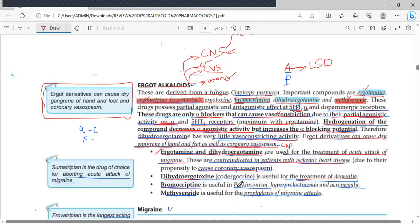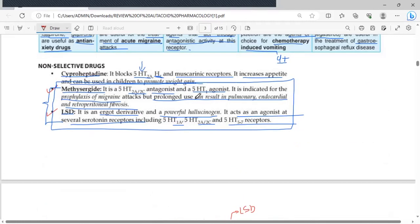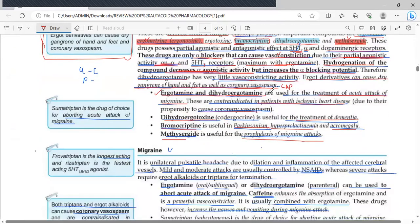Bromocriptine, I told you, can be used in the treatment of Parkinsonism, hyperprolactinemia, acromegaly, and also diabetes type 2 can be treated. Then methysergide can be used in the prophylaxis of migraine attack, but it has some side effects, which I will remind you: prolonged use can result in pulmonary, endocardial, and retroperitoneal fibrosis. And remember, endocardial fibrosis can lead to valvular dysfunction.